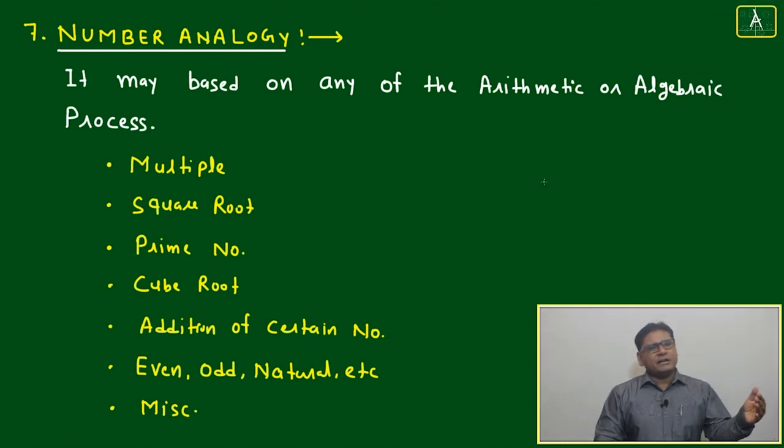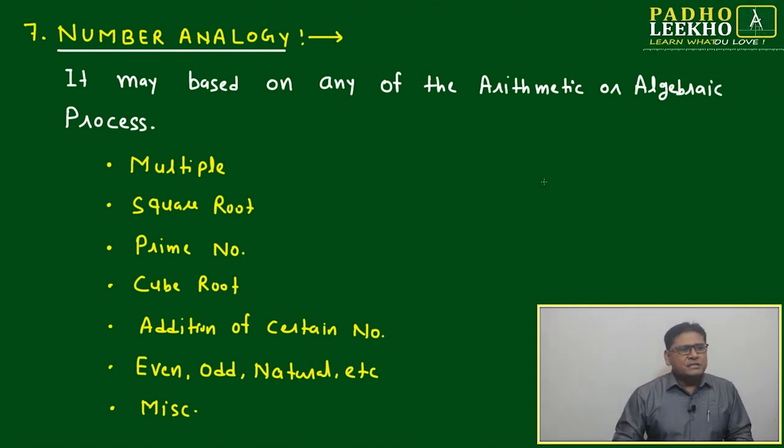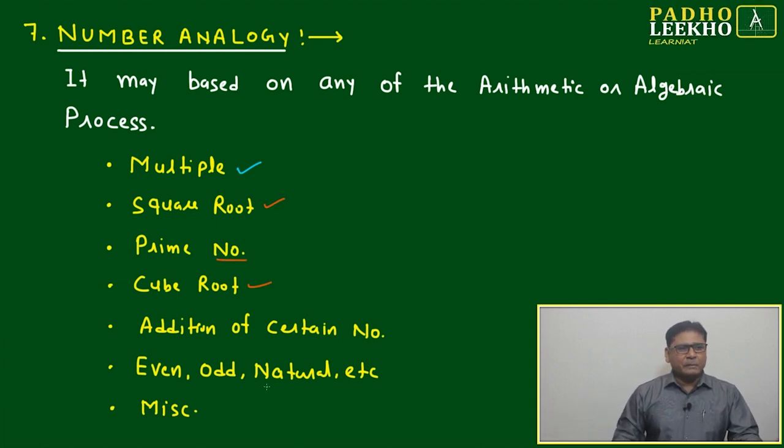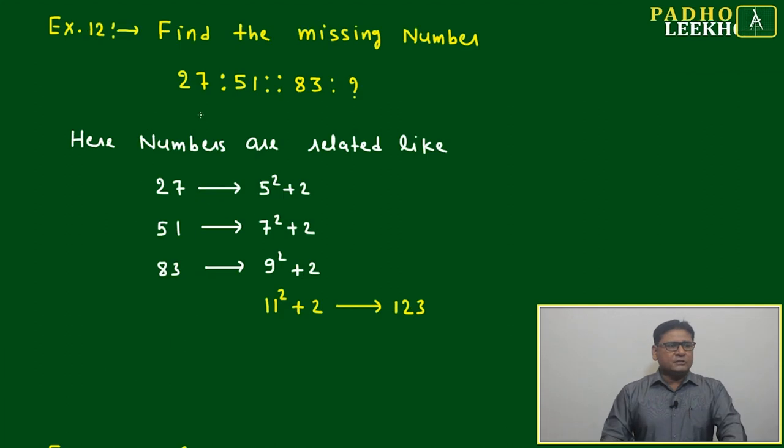Famous arithmetic relations we know include multiple, square root, prime number, cube root, addition of certain numbers, even or natural pattern, or miscellaneous category. Let's try to go through examples.